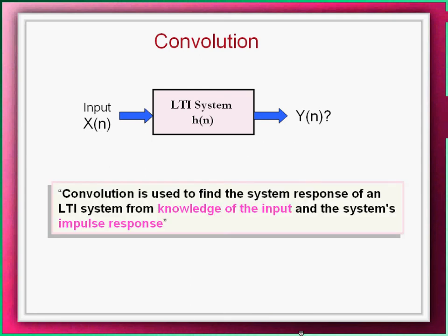And that is where convolution comes into picture. Convolution is used to find the system response of an LTI system from the knowledge of the applied input and system impulse response. I repeat, convolution finds output of a system using applied input and system's impulse response.